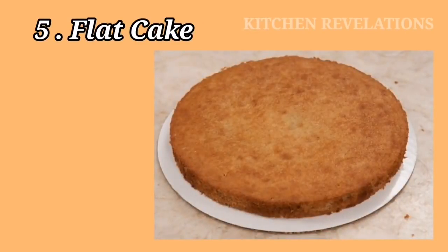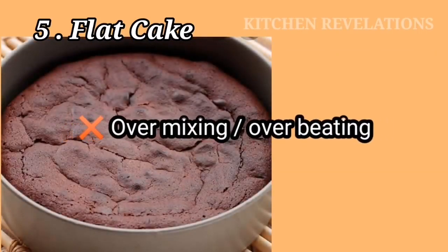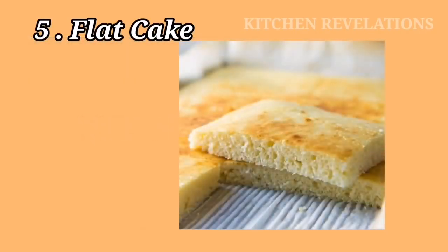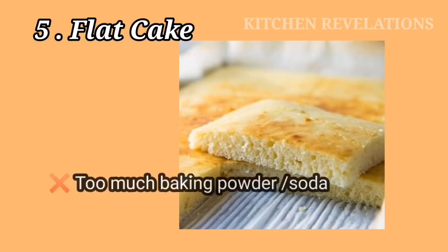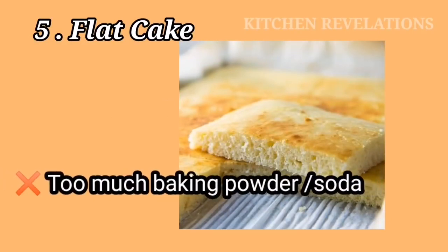The next problem is a flat cake. There are two reasons why a cake goes flat like a pancake and does not rise like a sponge cake. The first is over-mixing — do not whisk for a longer period of time; use the cut and fold method. The second reason is the usage of baking powder and soda: using too much or expired baking powder or soda will result in a flat cake.